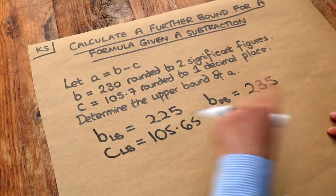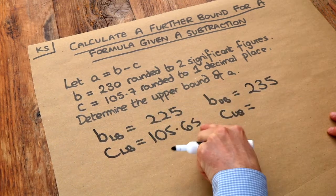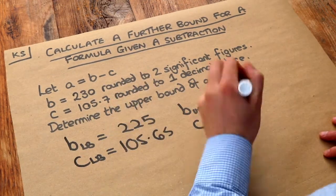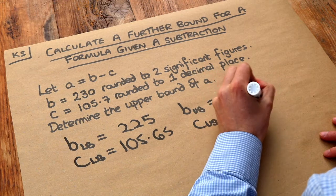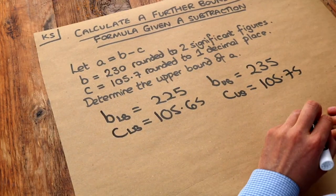And for the upper bound you just stick a 5 on the end so 105.75 and we want to determine the upper bound of A.